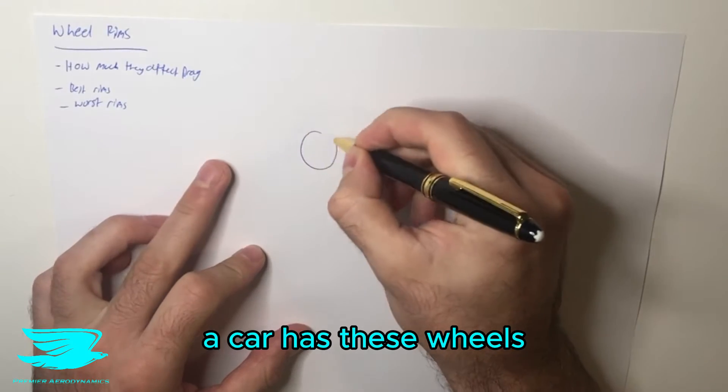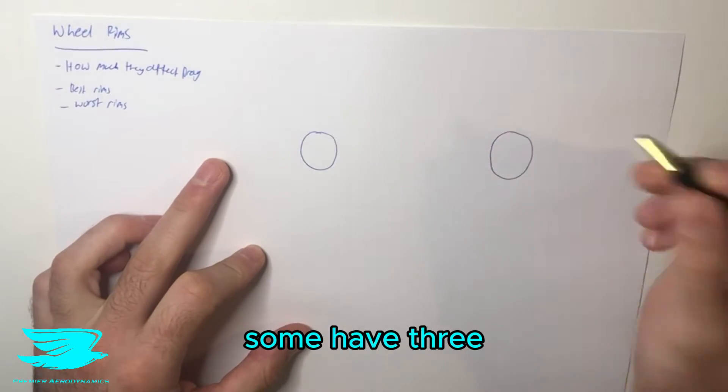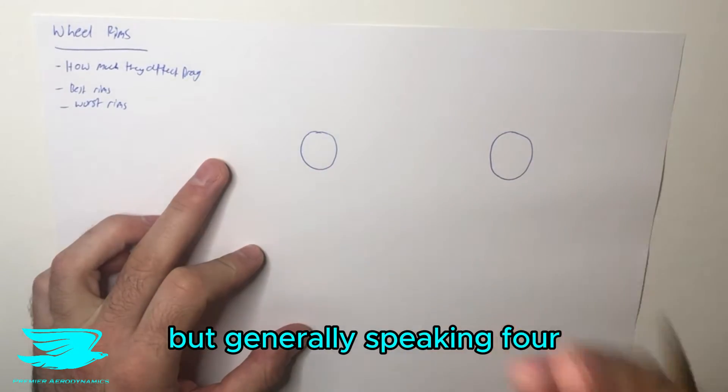So as we all know, a car has these wheels, four wheels, obviously. Some have three, others have six, but generally speaking, four.